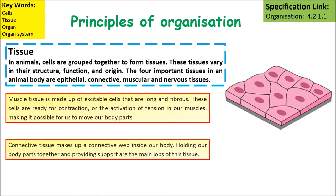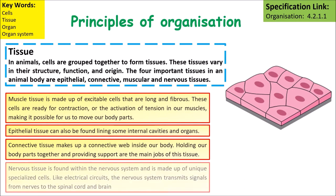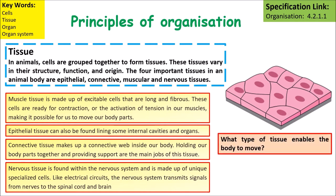Connective tissue is made up of a connective web of cells inside the body that holds our body parts together. Epithelial tissue is a lining tissue that surrounds organs — all organs will have a layer of epithelial tissue. Nervous tissue is found within the nervous system and is made up of nerve cells that carry nervous impulses from the brain to the rest of the body and vice versa. The type of tissue that enables the body to move is muscular tissue.